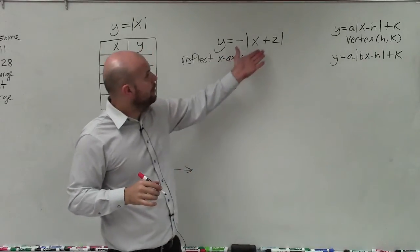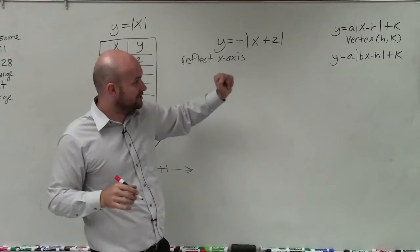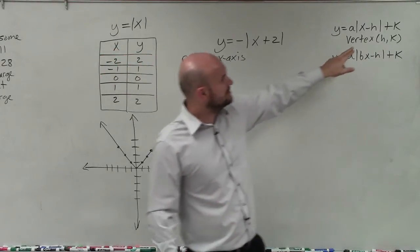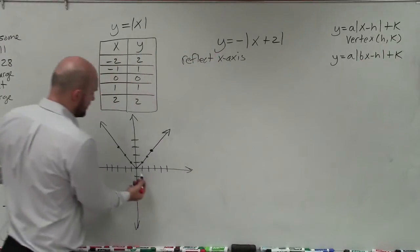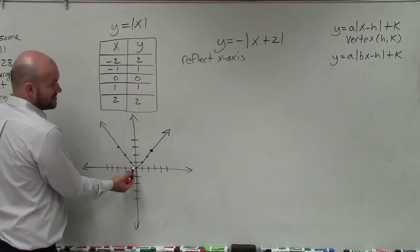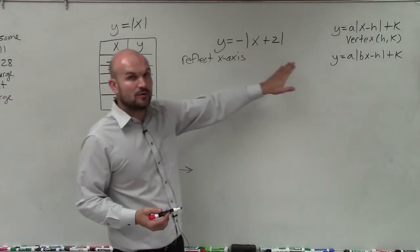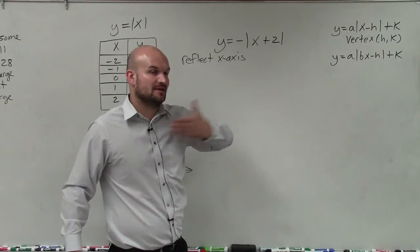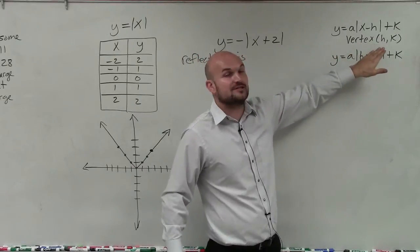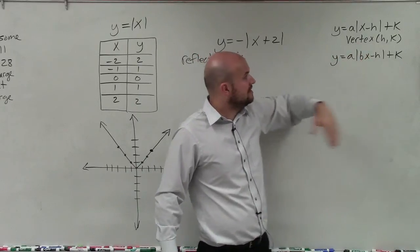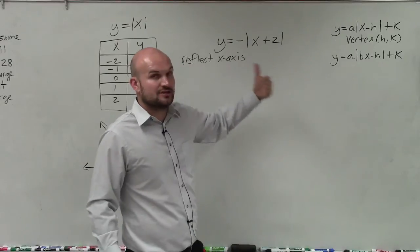Now the next thing is what exactly is that plus 2 going to do? Well the 2 represents our new x coordinate of our vertex. So on our parent graph the vertex is at 0,0. But by adding 2, what I am simply doing is I'm now shifting my graph left or right. That is our h, shifting it left or right because now that's the new x coordinate of our vertex. So how is it shifting it to the right or left?